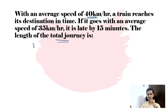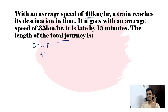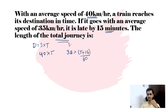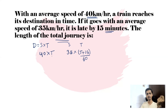We know distance = speed × time. In the first case, the train travels at 40 km/h and reaches the destination in time t minutes. In the second case, it travels at 35 km/h and arrives 15 minutes late, so the time is (t + 15) minutes. Since we need to convert minutes to hours, we divide by 60. So distance in case 2 is 35 × (t + 15)/60, and in case 1 it is 40 × t/60.